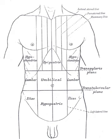The transpyloric plane is clinically notable because it passes through several important abdominal structures. It also divides the supracolic and infracolic compartments, with the liver, spleen, and gastric fundus above it and the small intestine and colon below it.